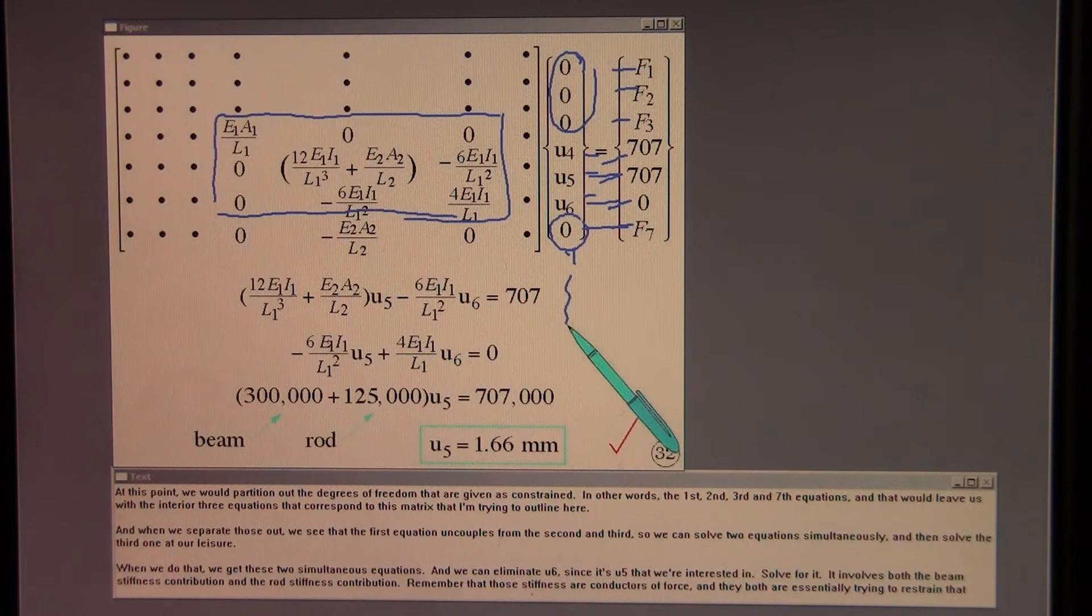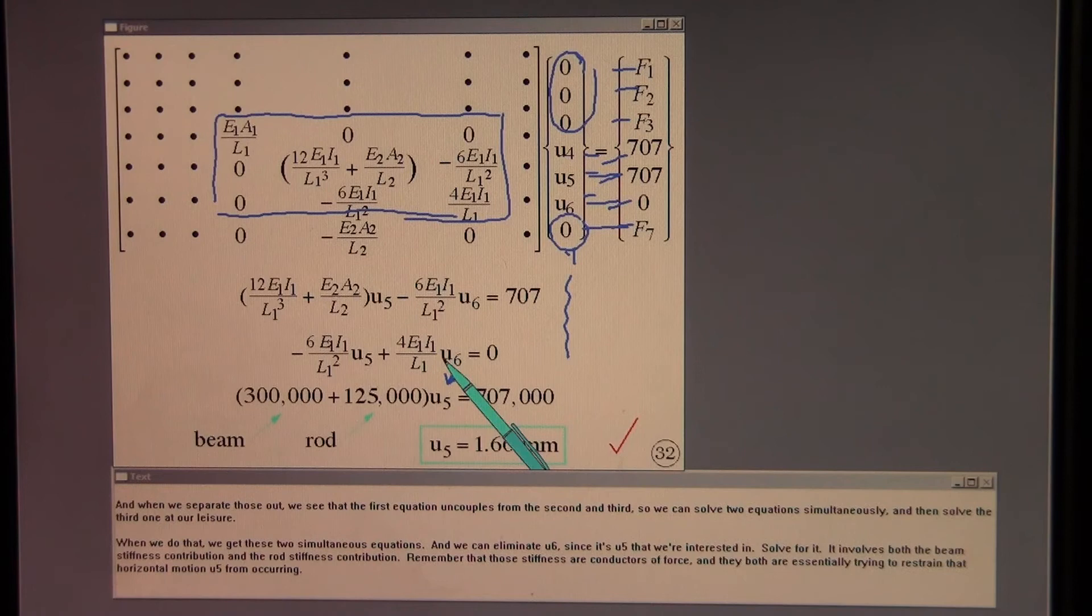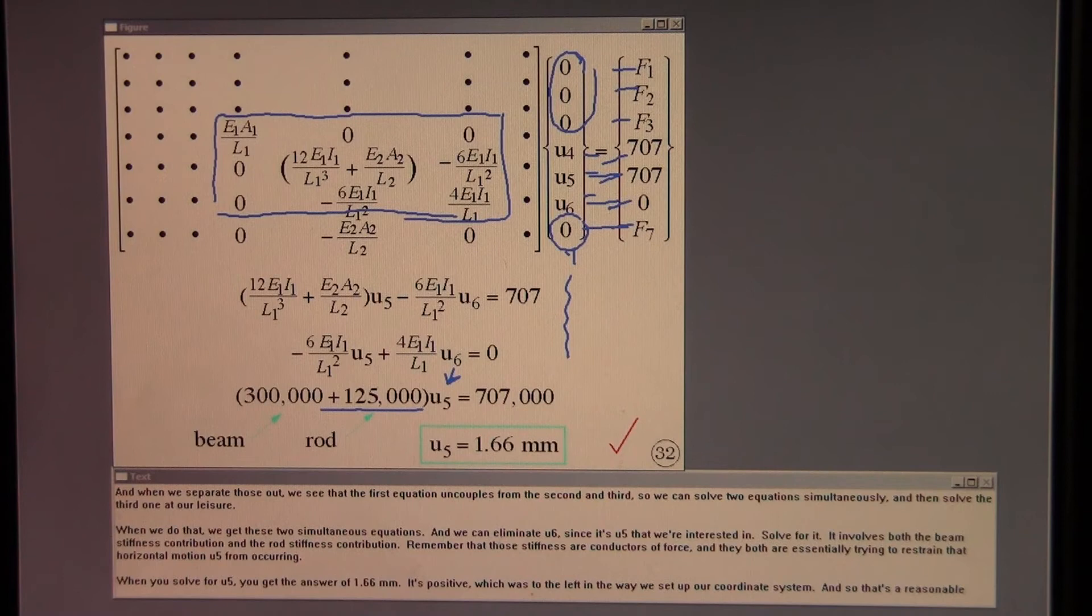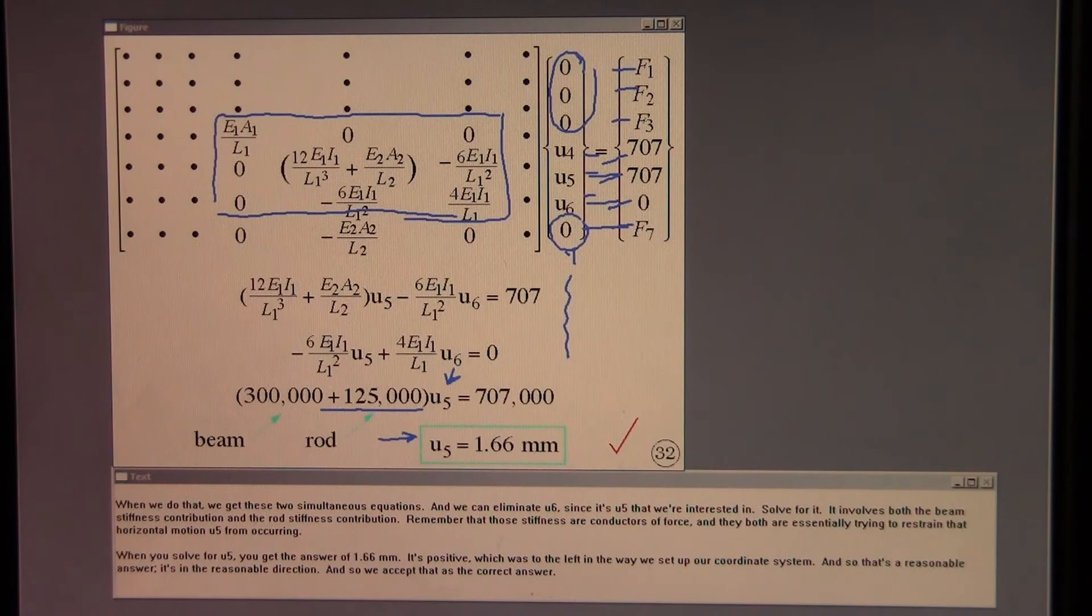When we do that, we get these two simultaneous equations. And we can eliminate U6 since it's U5 that we're interested in. Solve for it. It involves both the beam stiffness contribution and the rod stiffness contribution. Remember that those stiffnesses are conductors of force and they both are essentially trying to restrain that horizontal motion U5 from occurring. When you solve for U5, you get the answer of 1.66 millimeters. It's positive, which was to the left in the way we set up our coordinate system. And so that's a reasonable answer. It's in the reasonable direction. And so we accept that as the correct answer.